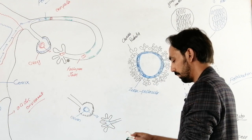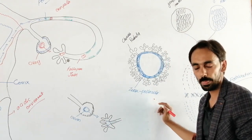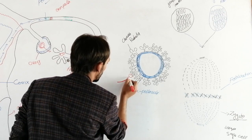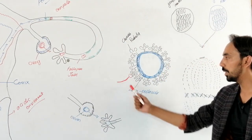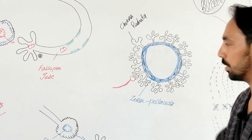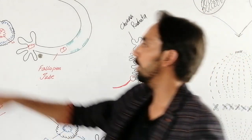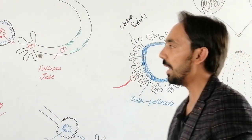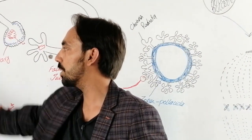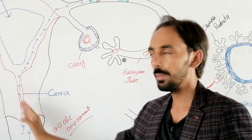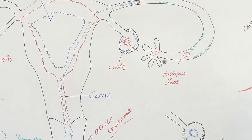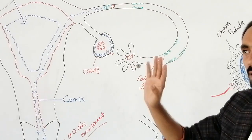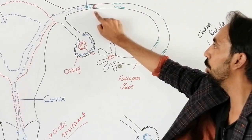Now we will discuss the different functions of the zona pellucida. When the sperm approaches, as I told you earlier, millions of sperms — you can say at the uterus, before fertilization, before meeting with the egg — millions of sperms are dead and millions are lost along the way. So only around 150 to 200 sperms will reach their destination, which is the ovum — the unfertilized egg.